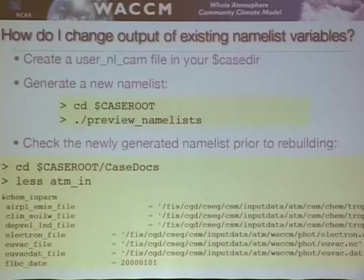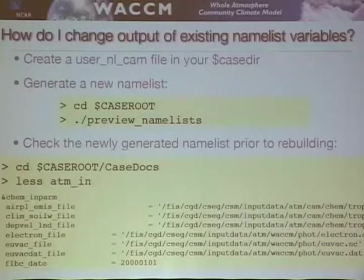There's also a new feature — not available in the code you can download now — where you can preview the namelist prior to doing a build. In the current version, you have to do the build first and then go into the case docs directory to look at the namelist there.